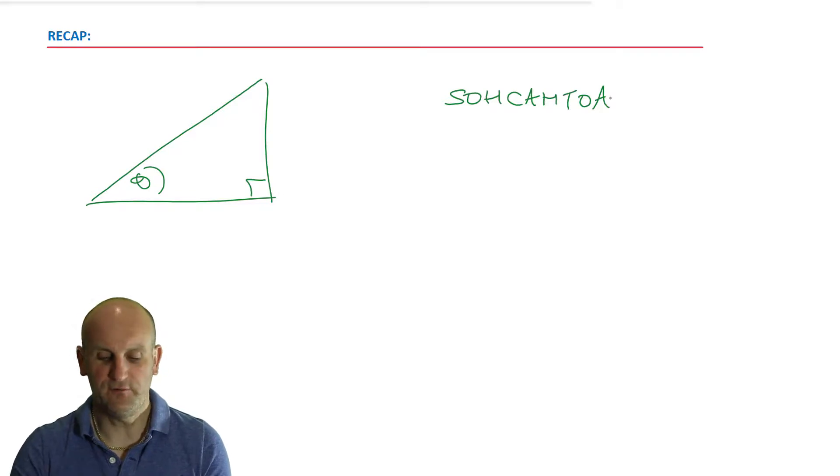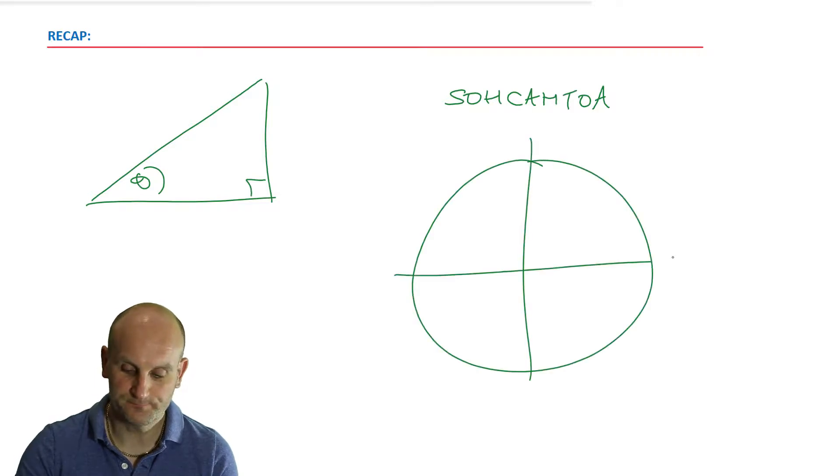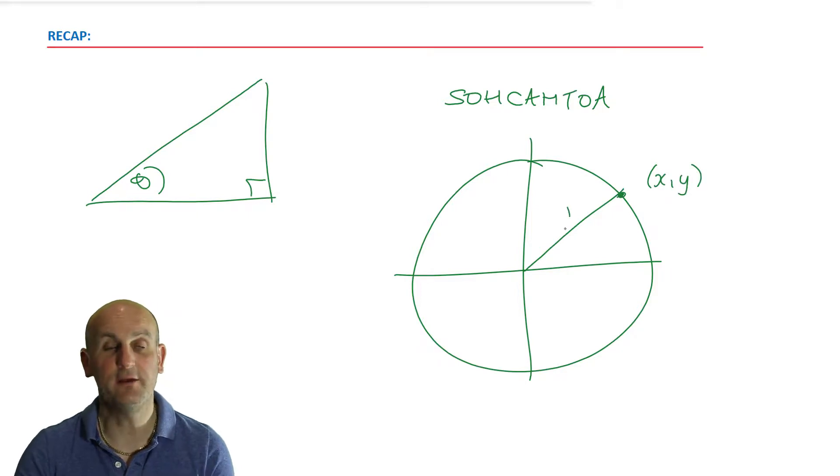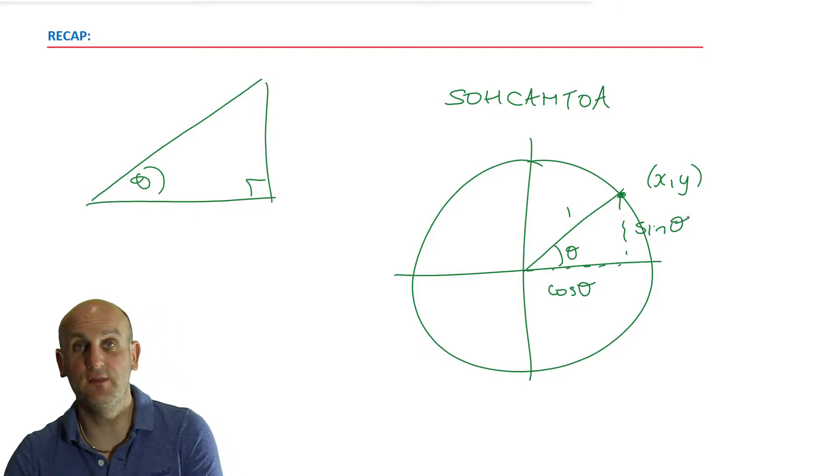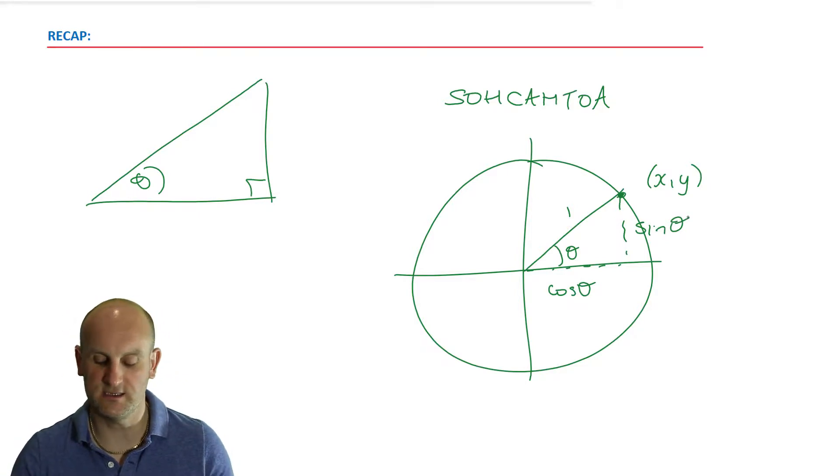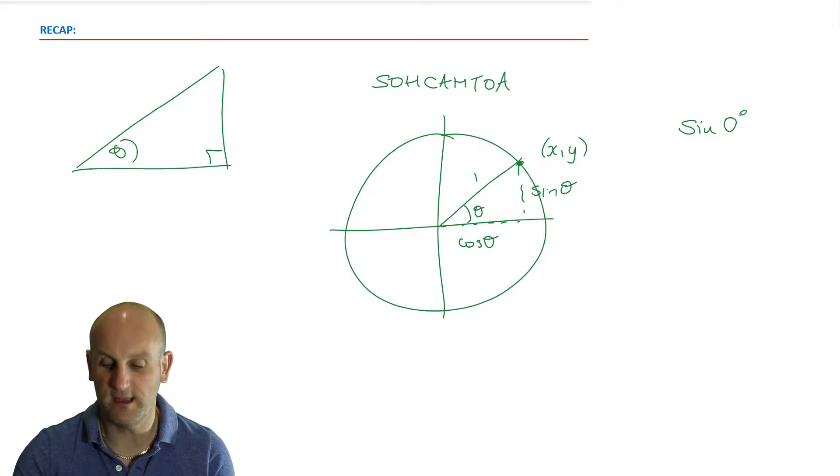So in our previous video, we looked at the idea that for a unit circle, if we had a general point, which had the coordinate x comma y, and that had a radius of one, then we could suggest that our angle here horizontally had a distance of cosine theta and vertically had a distance of sine theta. That's specific to the unit circle, but is used in a lot of stuff coming up. And if you're a bit confused about that, I could use the idea that if I wanted to find the sine of zero degrees, I could draw my unit circle.